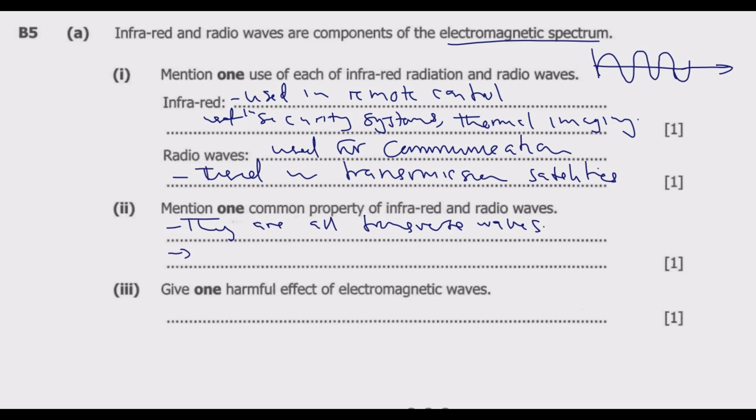A second property, in case you ask for two, they all travel through the vacuum. If you ask for three, they all travel at the same speed, which is the speed of light. This speed is 3 multiplied by 10 to the power of 8 meters per second in the vacuum.